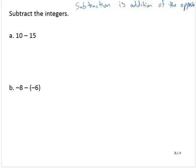So 10 subtract 15 is equivalent to 10 add the opposite of 15, which is negative 15.